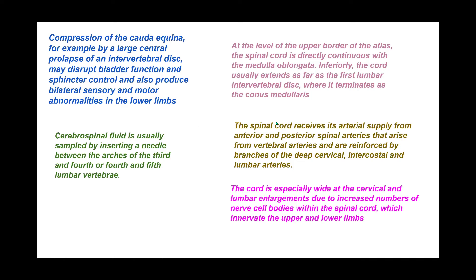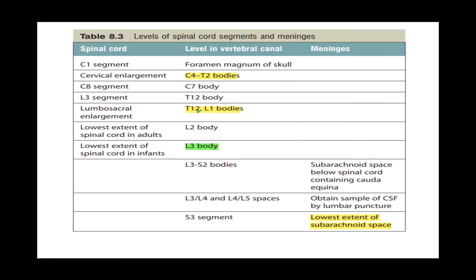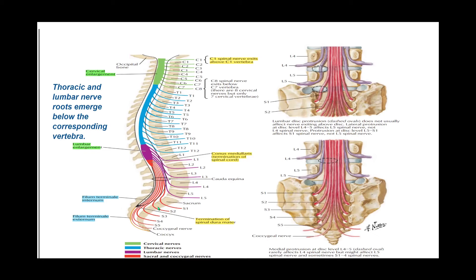From Frank Netter's Atlas of Human Anatomy: compression of the cauda equina — the bundle of nerves below the spinal cord — for example by a large central prolapse of an intervertebral disc, may disrupt bladder and anal sphincter control, and produce bilateral sensory and motor abnormalities in the lower limbs. 'Cauda equina' literally means 'tail of a horse' in Latin, and it is shaped like one. Compression by an intervertebral disc or spinal tumor can cause paralysis and bladder and bowel problems.